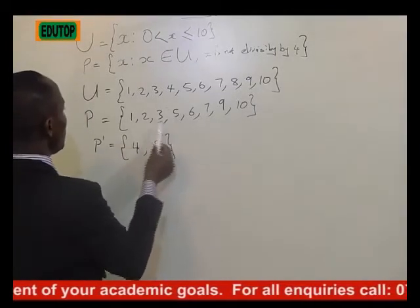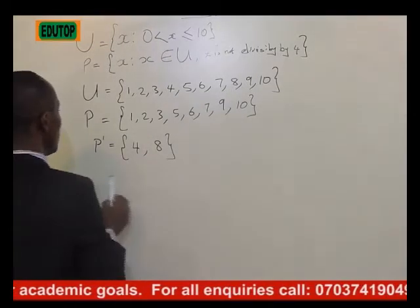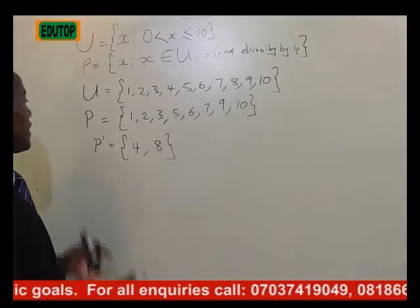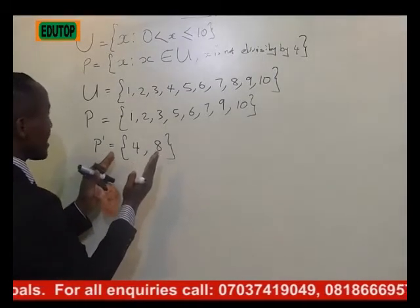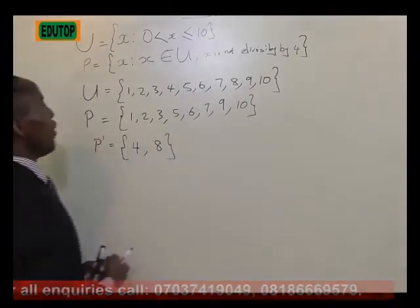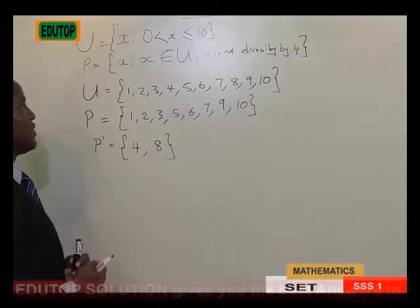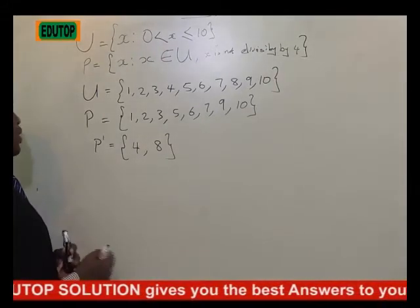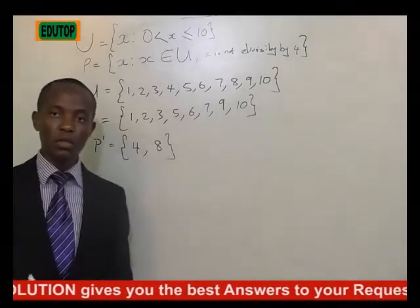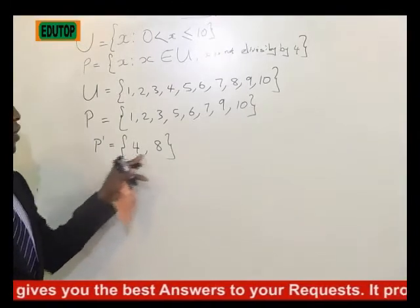4 is not in P, but it is in U. 8 is not in P, but it is in U. So P complement contains elements that are divisible by 4. P is the set of elements not divisible by 4, so P complement is the elements divisible by 4, which is just 4 and 8.